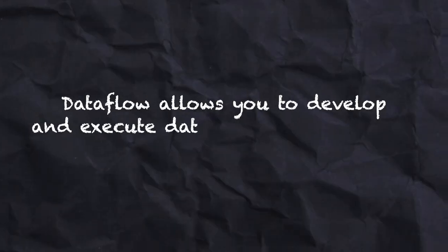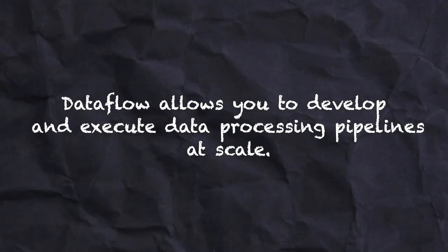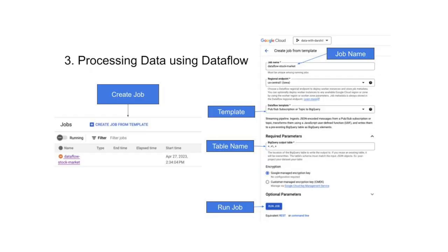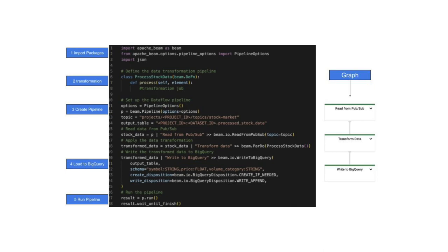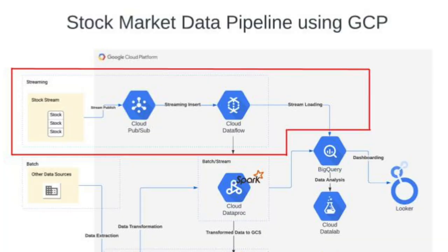Now we need to process this data. To process the data, we have one more service available on GCP called Dataflow. Dataflow allows you to develop and execute data processing pipelines at scale. It is designed to handle both real-time data and batch data, and it uses the framework called Apache Beam. So you can easily write your code in Python to create your pipeline and process your data. Using PubSub and Dataflow, we can easily ingest our real-time data, process it, and pass it forward.